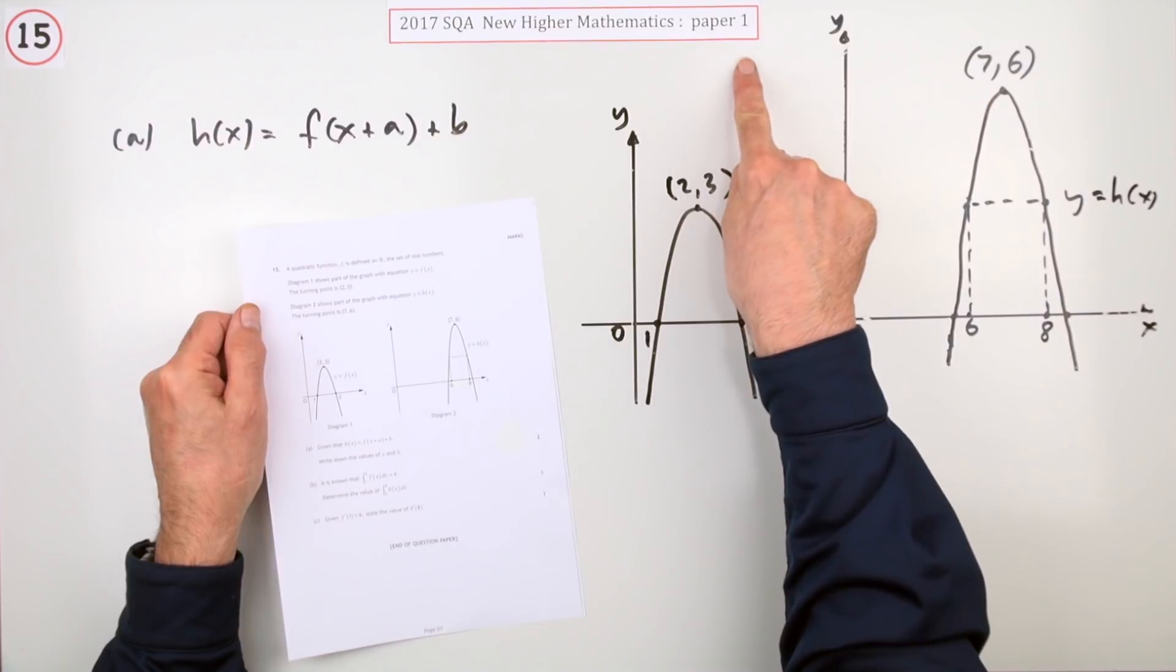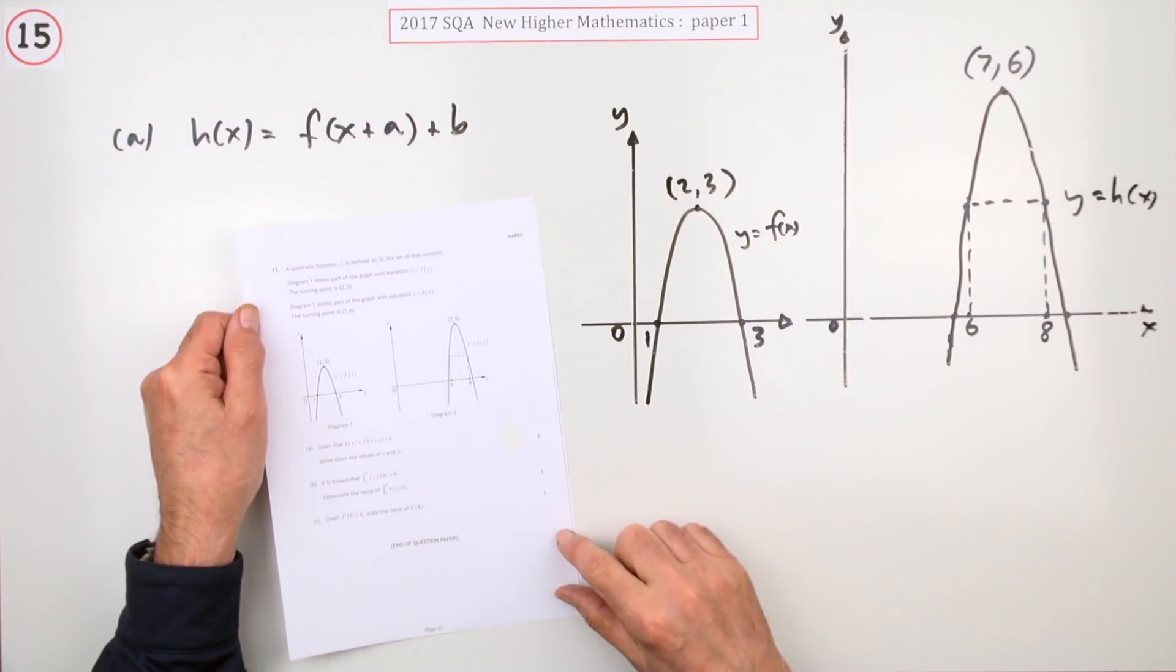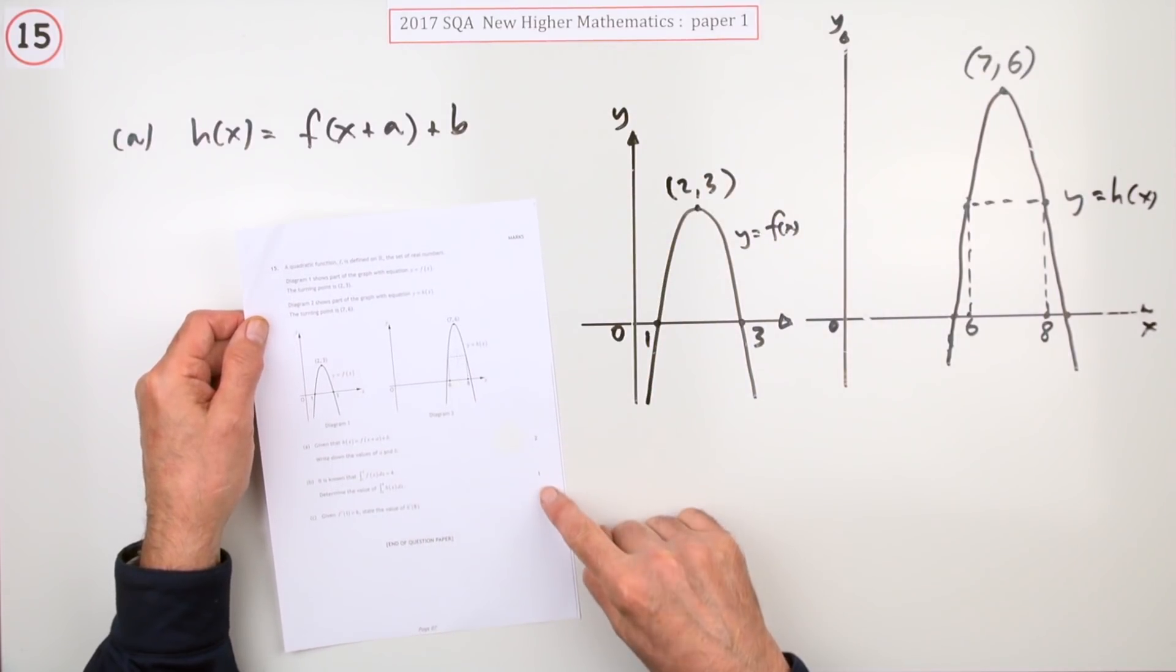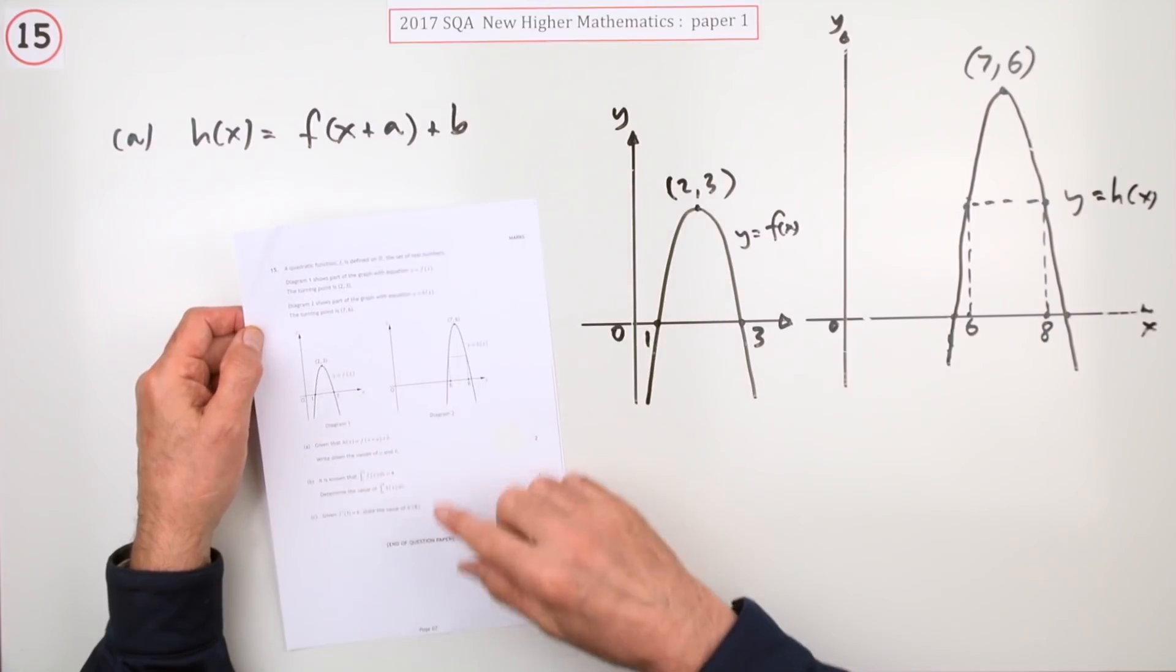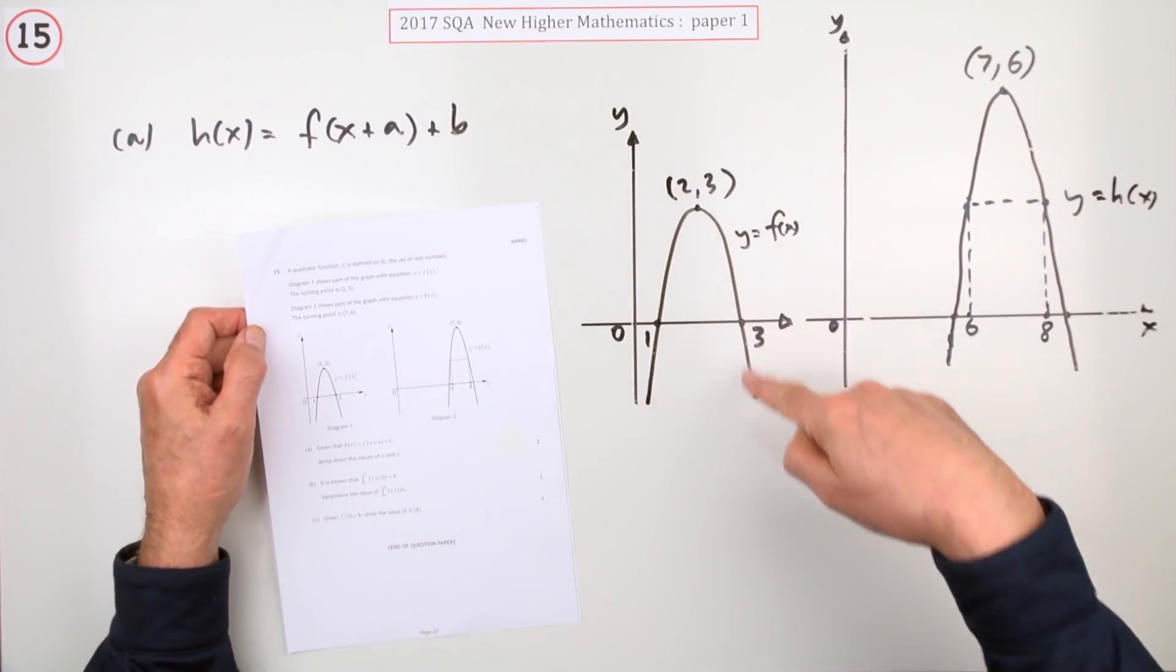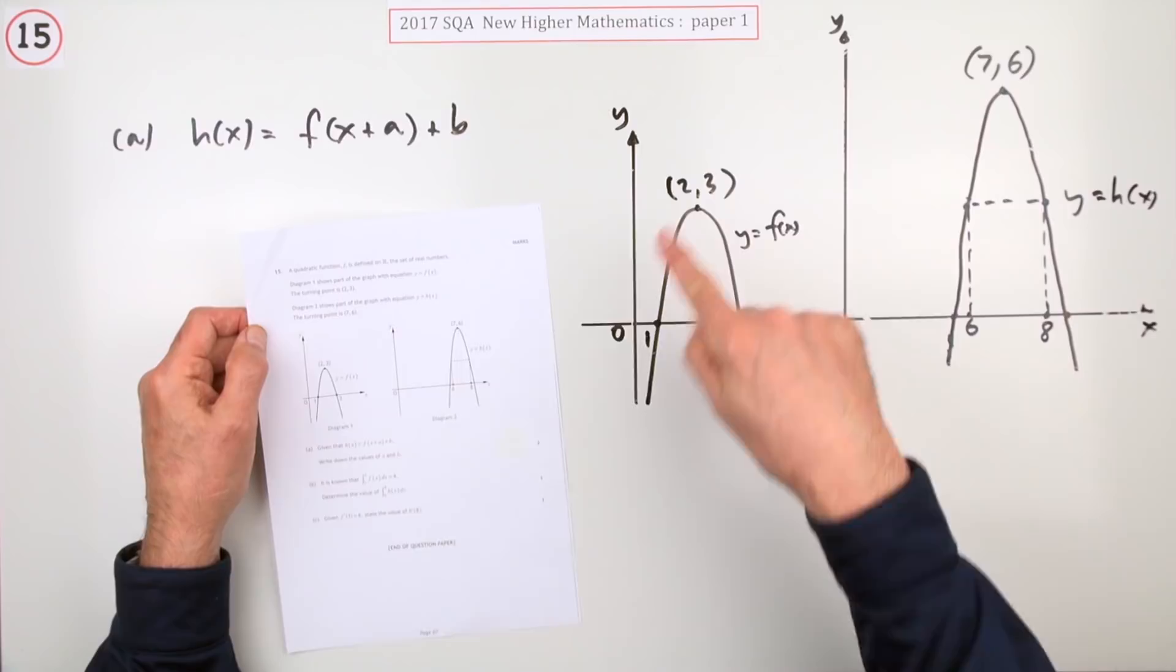So number 15, the last question in paper one of the 2017 higher maths. Here we go, there's only four marks here, takes up a whole page, a lot of description. A quadratic function f(x), some information given.